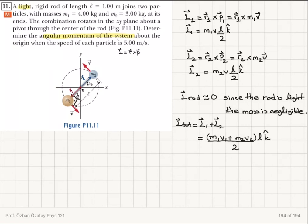This will be equal to (m1·v + m2·v) divided by 2, times l, in k hat direction. Let's plug in the numbers. The total angular momentum is m1 equals 4 kilograms times 5, plus m2 equals 3 kilograms times 5, divided by 2, multiplied by l equals 1 meter in k hat direction. This will be 20 plus 15 divided by 2, which is 35 over 2 k hat.